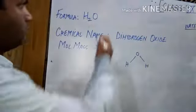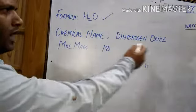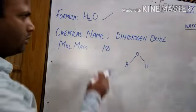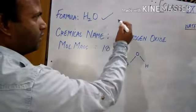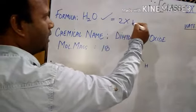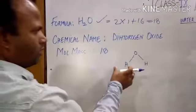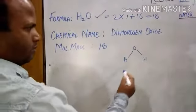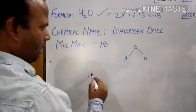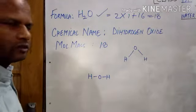The molecular formula of water is H₂O. The chemical name is dihydrogen oxide, commonly known as water. The molar mass of H₂O is 18 — calculated as 2×1 + 16 = 18. Now, water has this structure — this is the correct distorted structure, and we basically go for this type of structure.